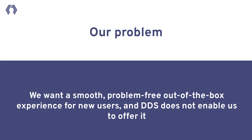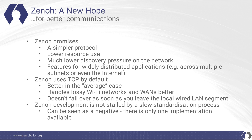Our problem is that we want a smooth, problem-free, out-of-the-box experience for new users, and DDS does not enable us to offer it. Zenoh offers new hope for better communications. Zenoh presents a simpler protocol, lower resource use, lower discovery pressure, and it has features for widely distributed applications such as across multiple subnets and even the internet. Zenoh uses TCP by default, which is better in the average case. UDP is very good if you've got a network that can work with it, but for the average new user, we really want something that will work well and let experts tune their networks for specific cases. Zenoh also handles lossy Wi-Fi networks and wider area networks better because of TCP use, and it doesn't fall over as soon as you leave the local LAN segment. We also think that Zenoh development is not stalled by a slow standardization process — though this could be seen as a negative because there's only one implementation available — but for us we are looking for rapid feature development to support the future of ROS2.